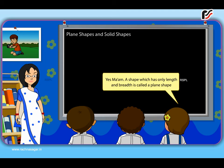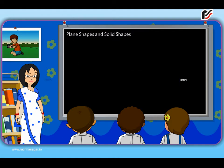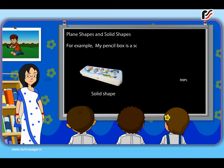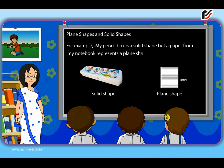Yes, ma'am. A shape which has only length and breadth is called a plane shape. And a shape which has length, breadth and height is called a solid shape. For example, my pencil box is a solid shape but a paper from my notebook represents a plane shape.